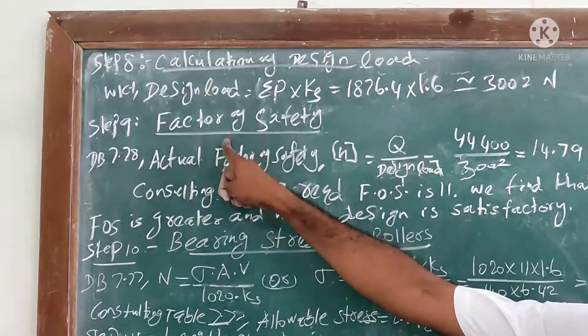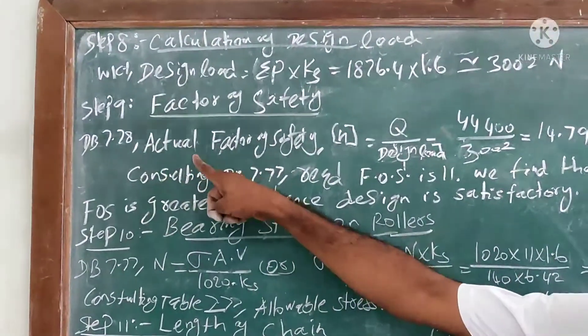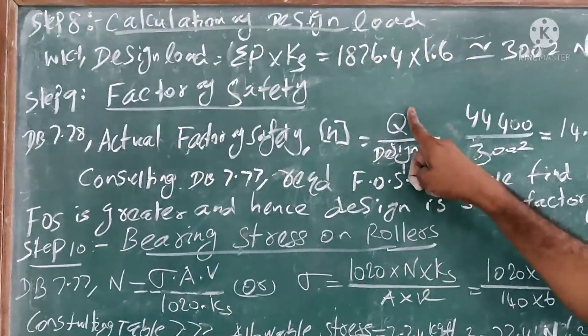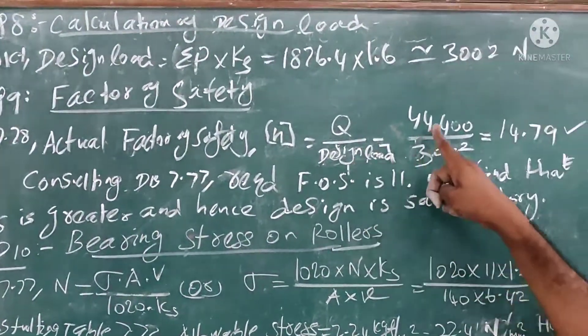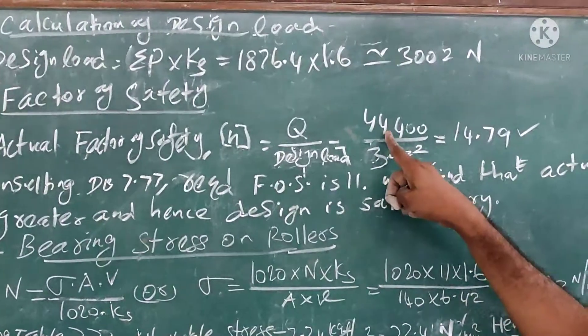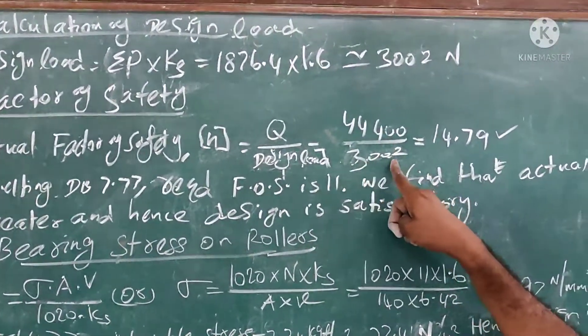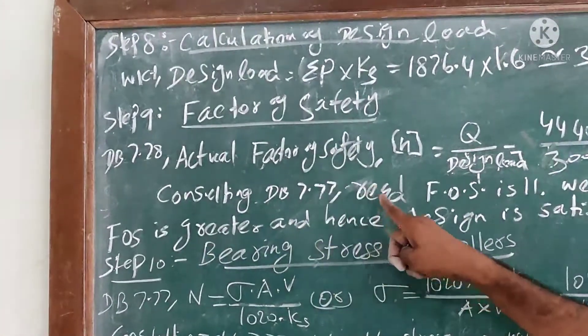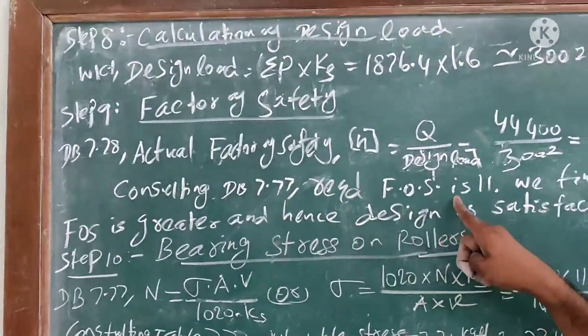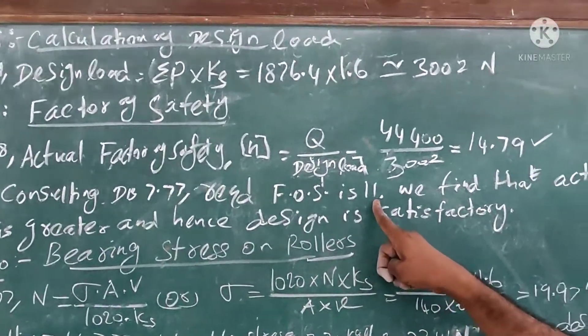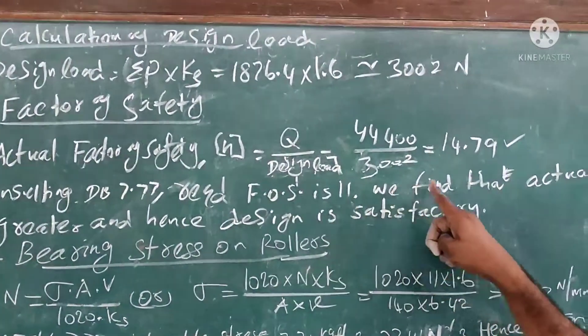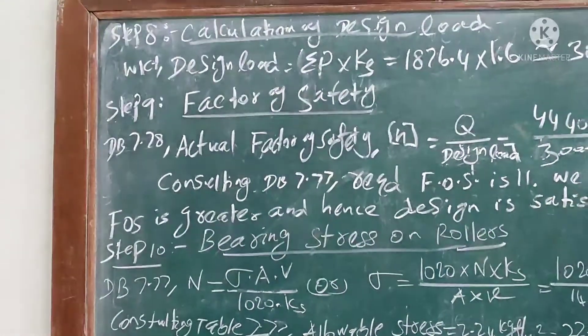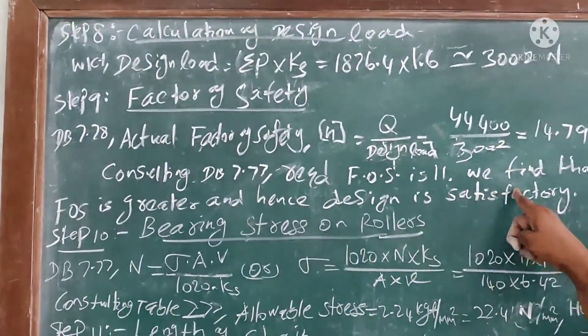Now calculate factor of safety. From 7.78, actual factor of safety N = breaking load/design load = 44400/3002 = 14.79. Now consulting data book, the required factor of safety is given as 11. We find that actual factor of safety is greater than 11, so our design is satisfactory.